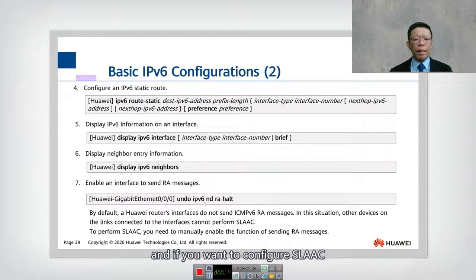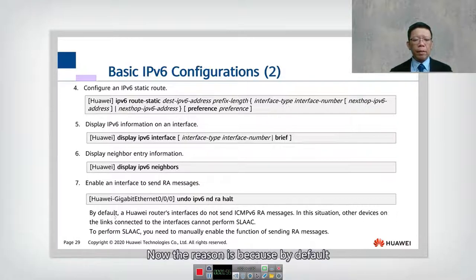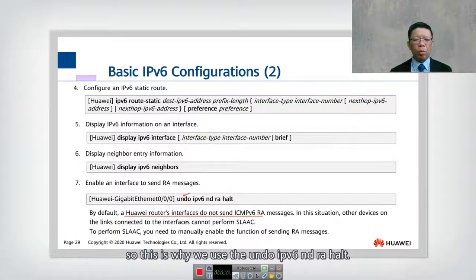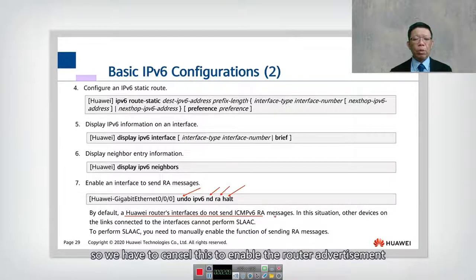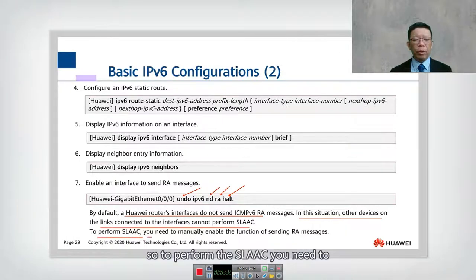To configure SLAAC, go to the interface on the router and use the command 'undo ipv6 nd ra halt'. By default, a Huawei router interface does not send ICMP router advertisements, so we use this command to cancel the suppression and enable router advertisement. Without this, other devices on the link cannot perform stateless auto-configuration.